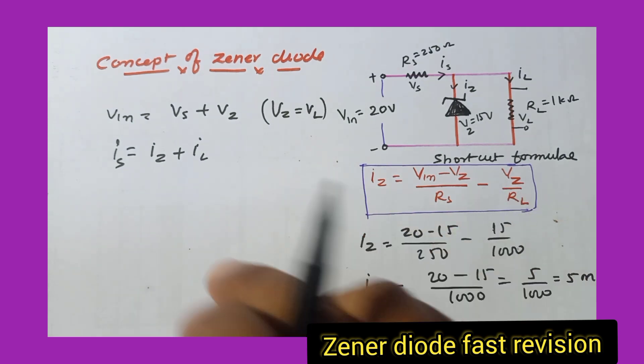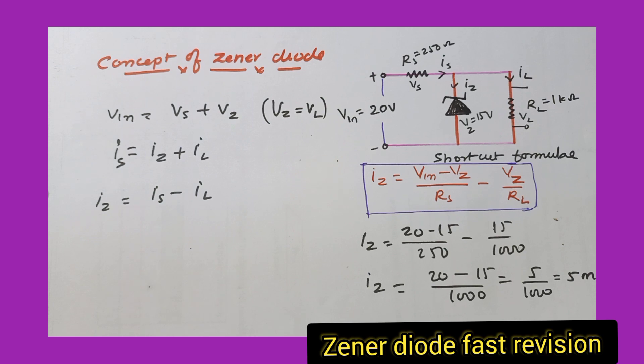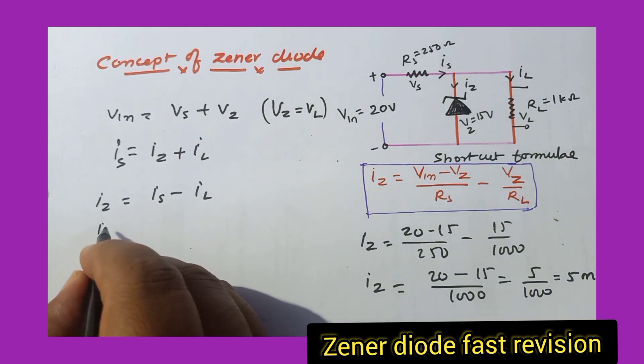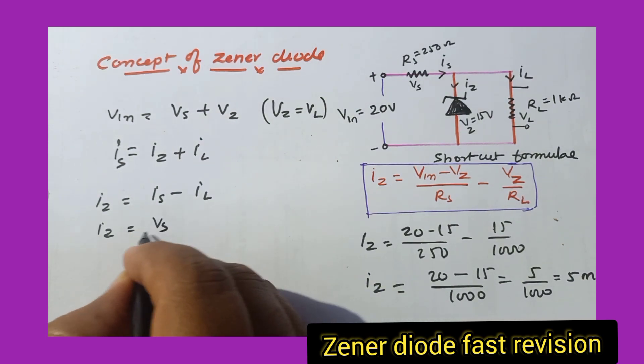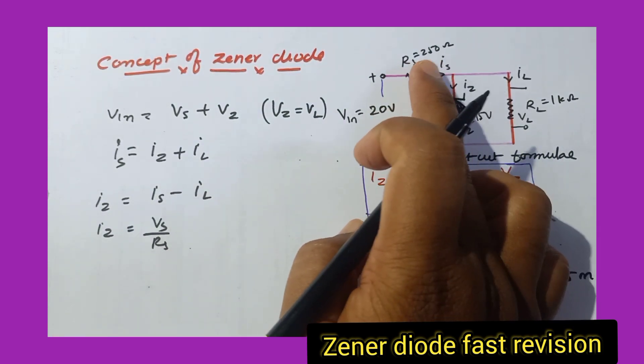Then after that, if he is asking us to find out Iz, the simple technique here is Iz = Is minus Il. So this can also be written as Is = Vs by Rs. That means series voltage across the series resistance as well as the resistance of the series resistor.